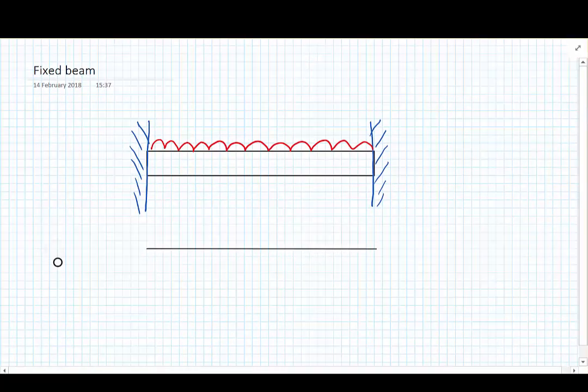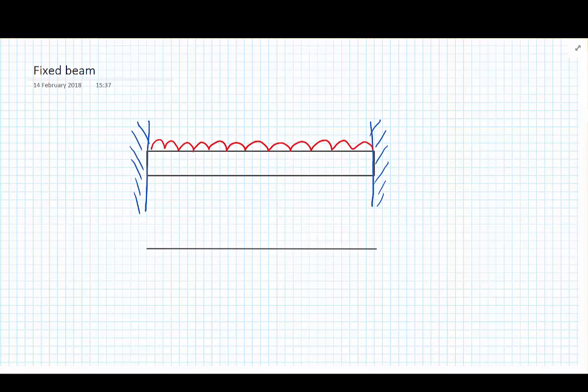We'll begin by looking at the points of certainty that we know about this structure. We know for definite because of the support conditions that we have no deflection in the y direction at the left hand side or at the right hand side, and as a result of the loading, we also have a deflection in the middle. At the moment these points of certainty only give us the same information that we knew when we had a simply supported beam.